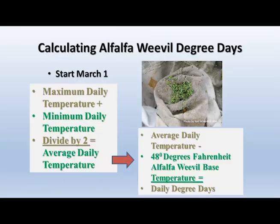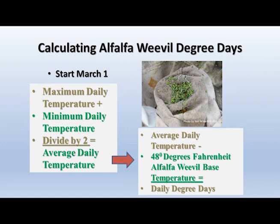You can calculate the life stage of alfalfa weevil by determining degree days. Starting on March 1st, take the daily maximum temperature plus the daily minimum temperature, divide by 2 to get the average daily temperature, then subtract 48°F (the alfalfa weevil base temperature) to get daily degree days. Instead of doing these calculations by hand, you can use an online calculator for alfalfa weevil degree days.